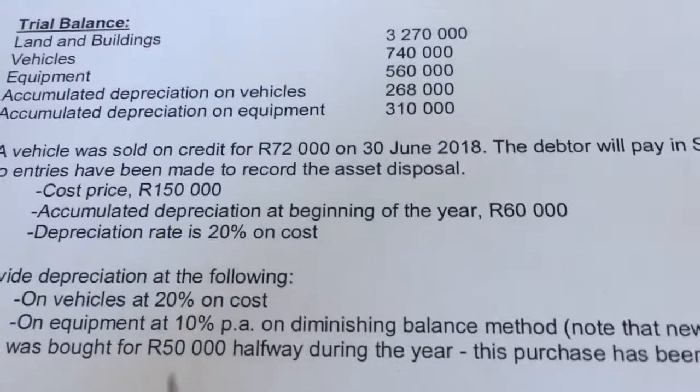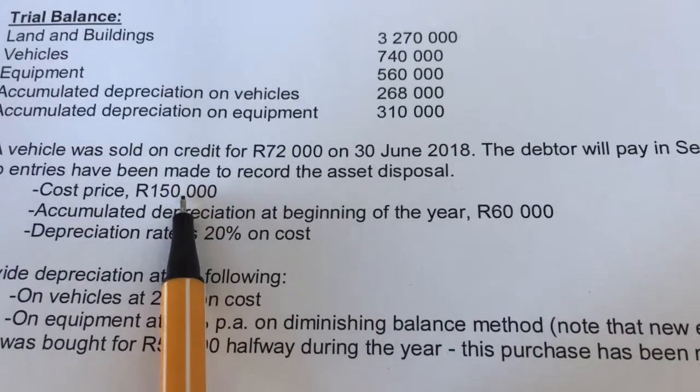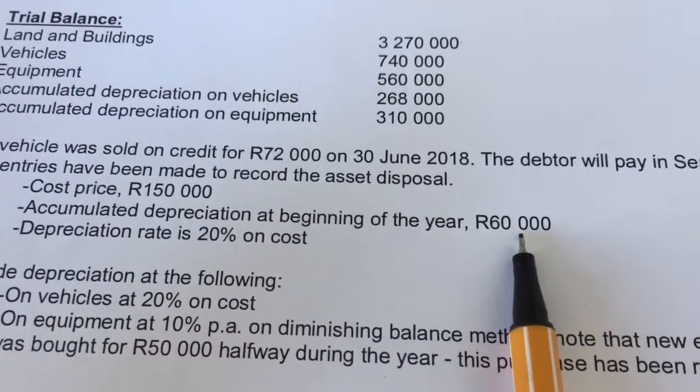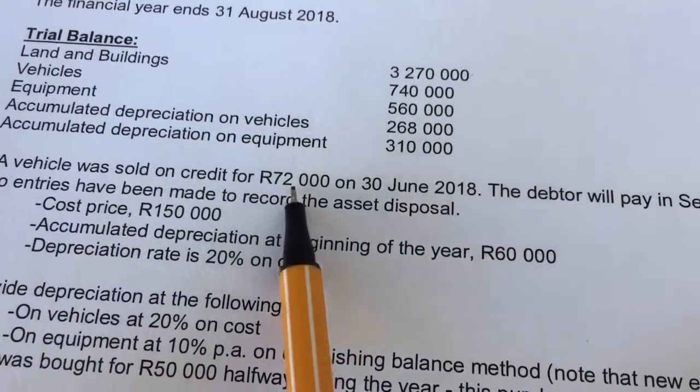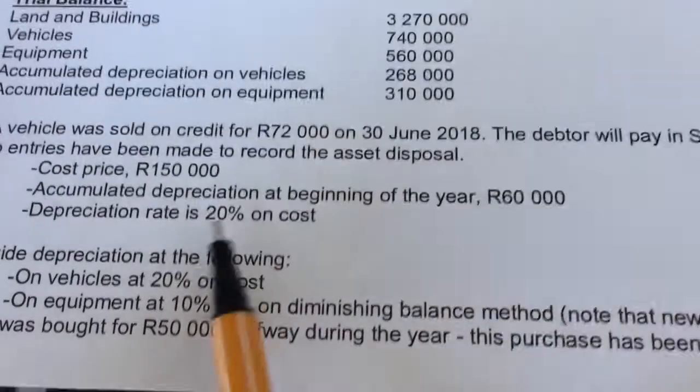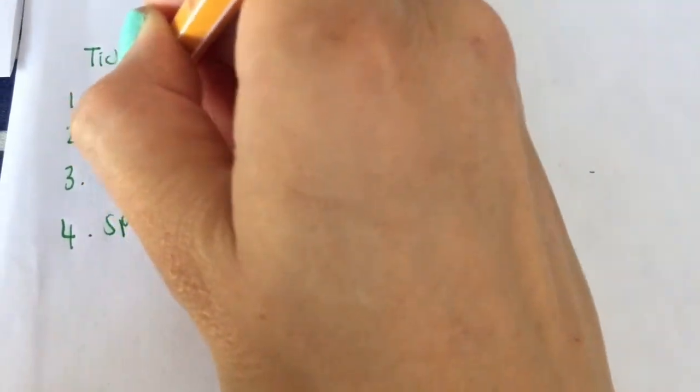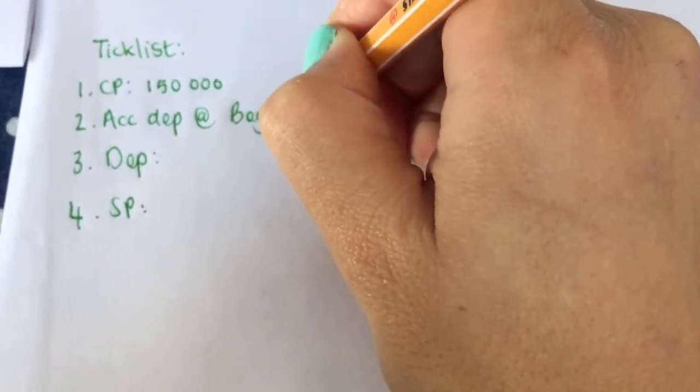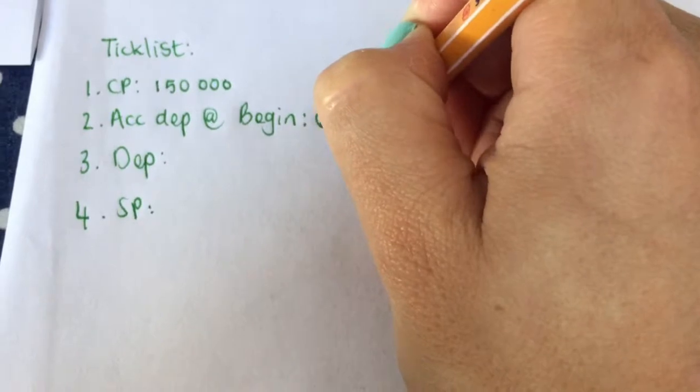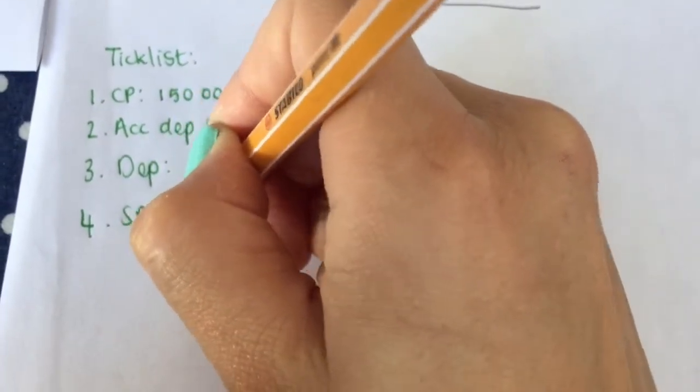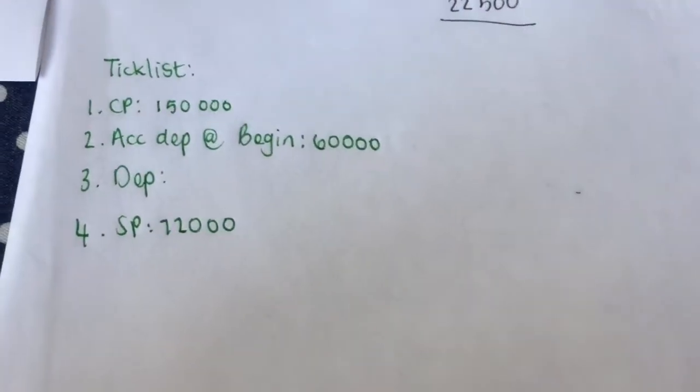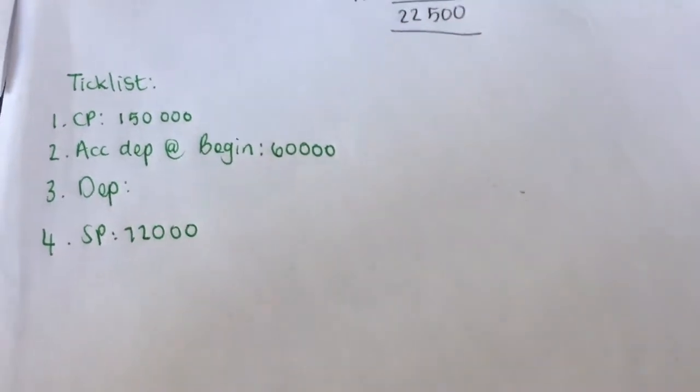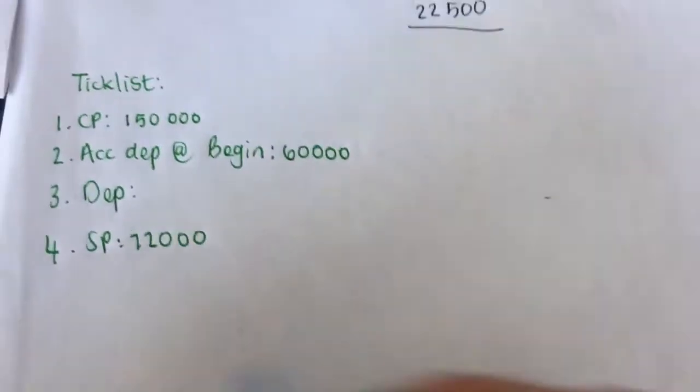So the first thing I need is the cost, they gave it to me. Then I need the cumulative depreciation at the beginning of the year and I need the selling price. Depreciation I have to work out. Cost price is 150,000, and accumulated depreciation is 60,000. Selling price is 72,000.